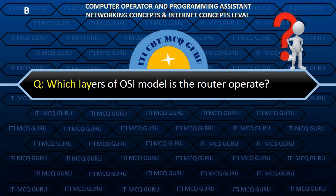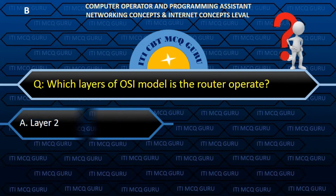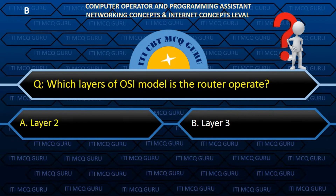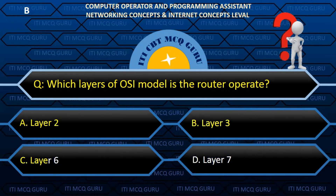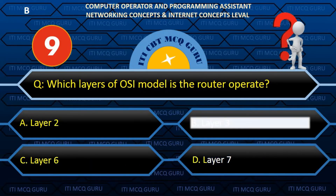Which layer of the OSI model does the router operate? B. Layer 3.